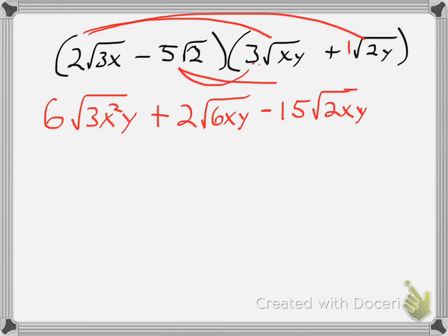And then finally, my last: negative 5 root 2 times root 2y will give me a negative 5 square root of 4y. Now that I've FOILed, I want to see if I can combine any of these terms. Looking at my terms right now, there are no like radicals.